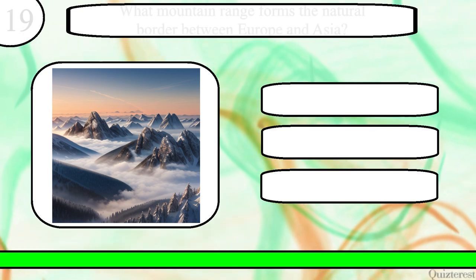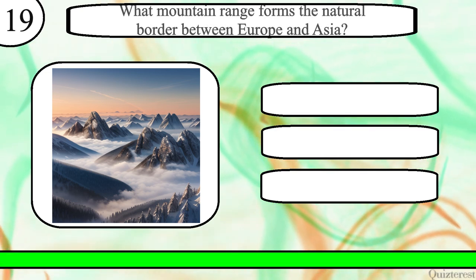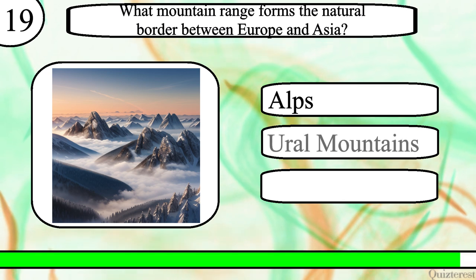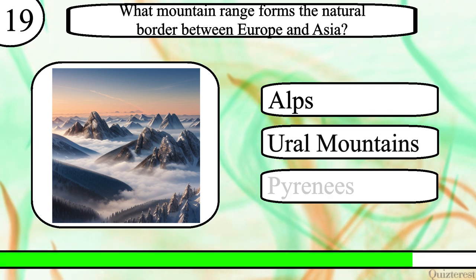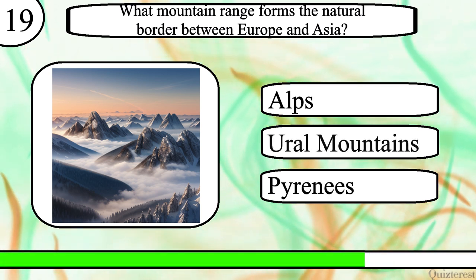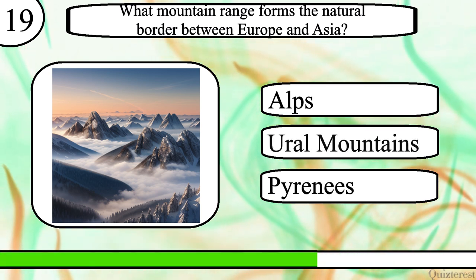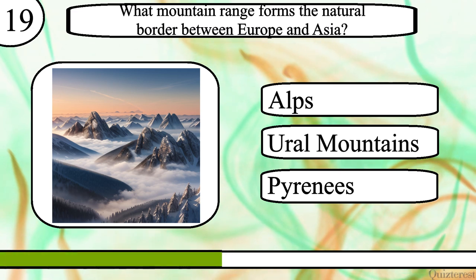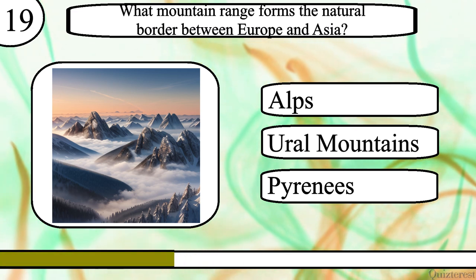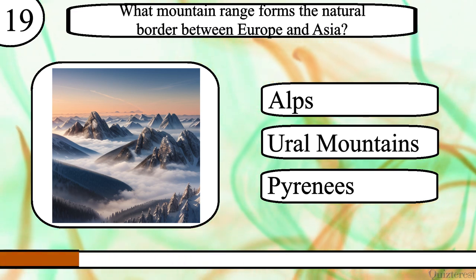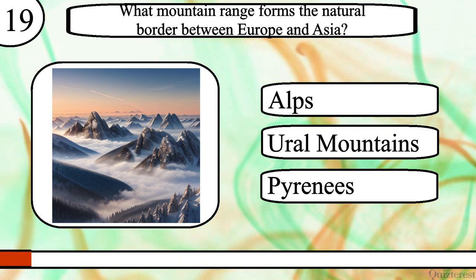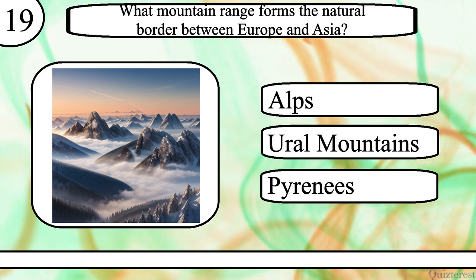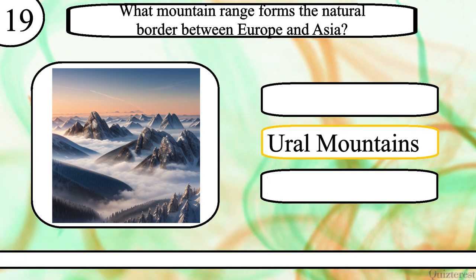Question 19. What mountain range forms the natural border between Europe and Asia? Alps, Ural Mountains or Pyrenees? The correct answer is Ural Mountains.